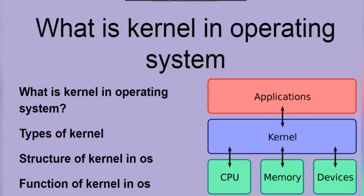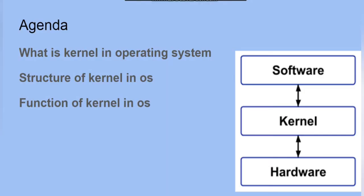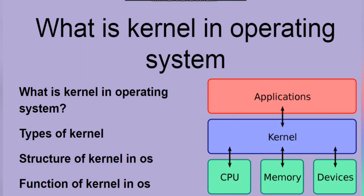It is all about the kernel. We have the kernel type, the structure of a kernel, and the function of a kernel. All these things are covered by the kernel: process management, memory management, device management — everything is done by the kernel. We have micro kernel and monolithic kernel. If you have any question related to this session, you can ask in the comment section below. Thanks for watching.